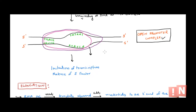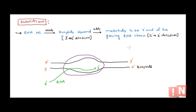This is where the transcription bubble is formed and transcription begins. After separation, initiation of transcription occurs and the sigma factor is released since recognition, binding, and open complex formation are complete. This initiates the transcription. Then comes elongation: RNA polymerase reads the template strand — which runs 3 prime to 5 prime — and synthesizes RNA in the 5 prime to 3 prime direction, adding new nucleotides at the 3 prime end of the growing RNA chain.